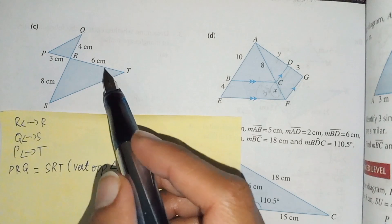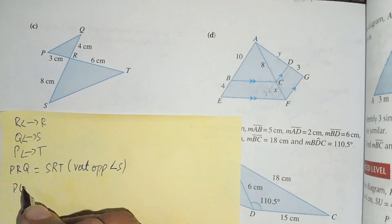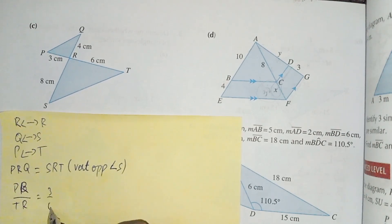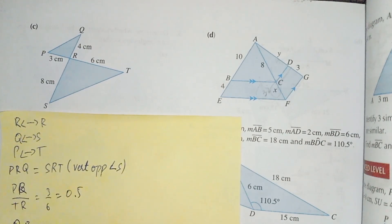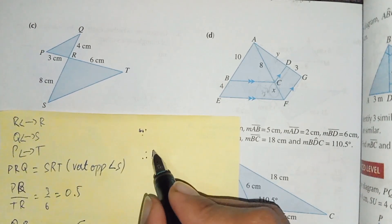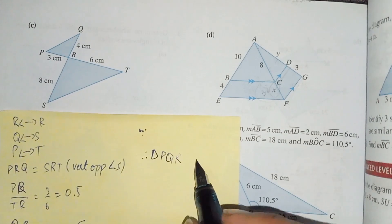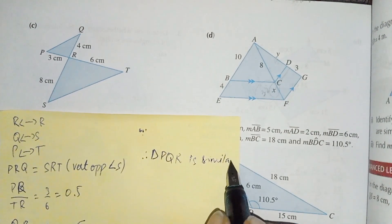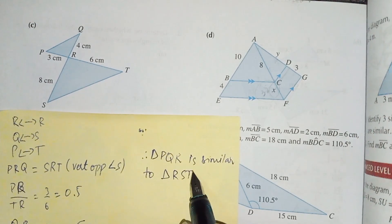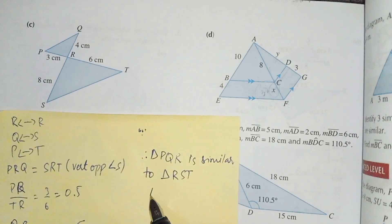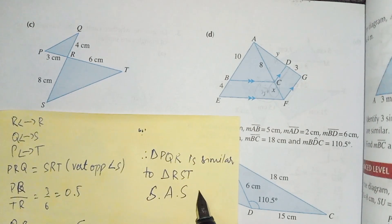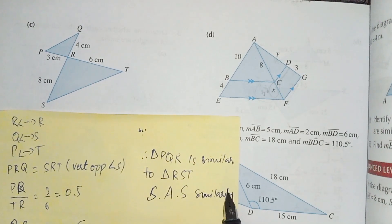Now students, we have to find the ratios of the sides of these triangles. PR over TR equals 3 over 6, which gives 0.5. And QR over RS equals 4 over 8, which also gives 0.5. Therefore, triangle PQR is similar to triangle RST, and because of which test? The Side-Angle-Side similarity test.